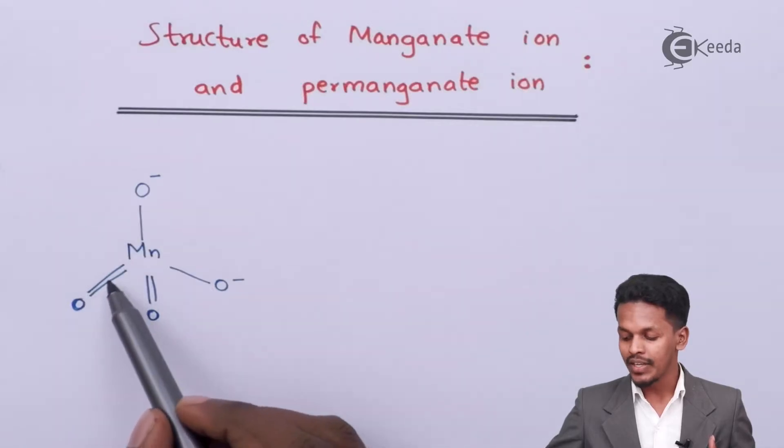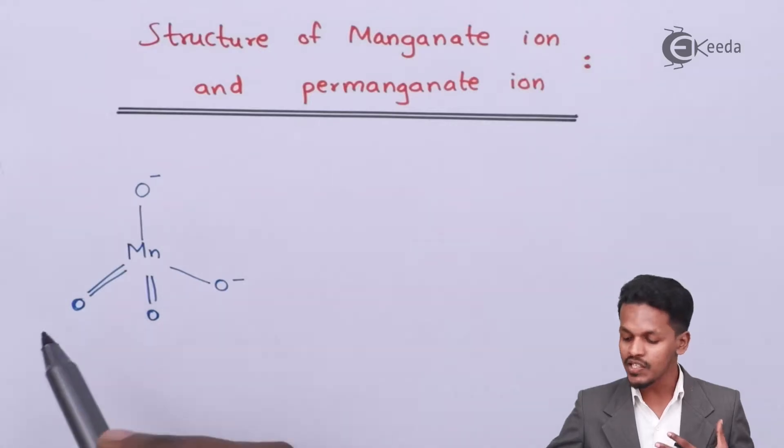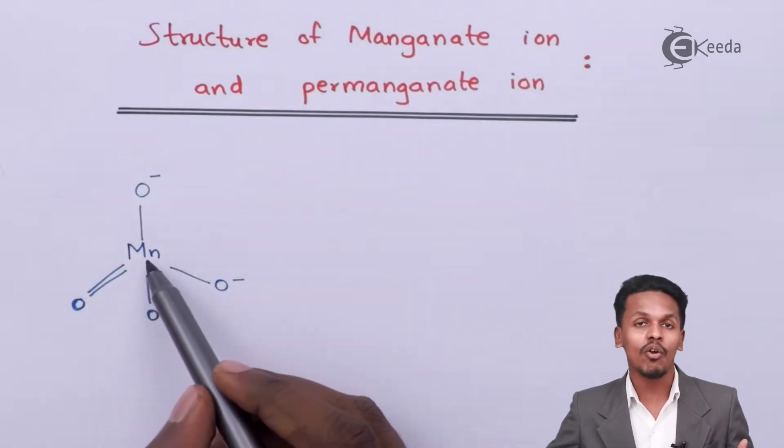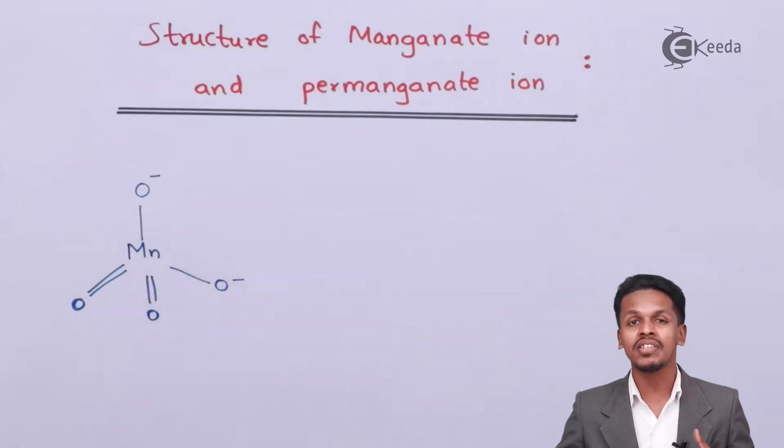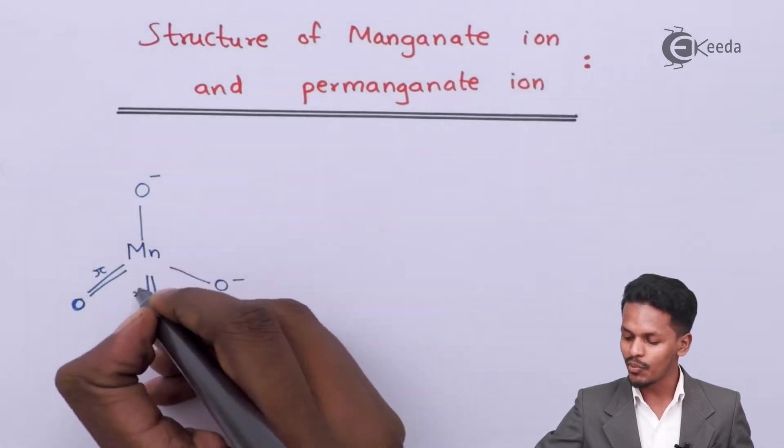Talking about this bond, this bond is a double bond. This arises because of the presence of the p orbital for the oxygen atom and the d orbital for the manganese atom. The overlapping of the p and d orbitals takes place such that there is formation of a pi bond here as well as a pi bond here.